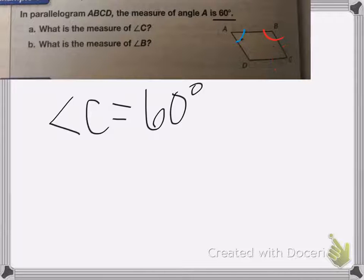Now angle B, if you look, if we combine angle A and B together, it gives us a straight line. You see this straight line here? So that means a straight line is 180 degrees.